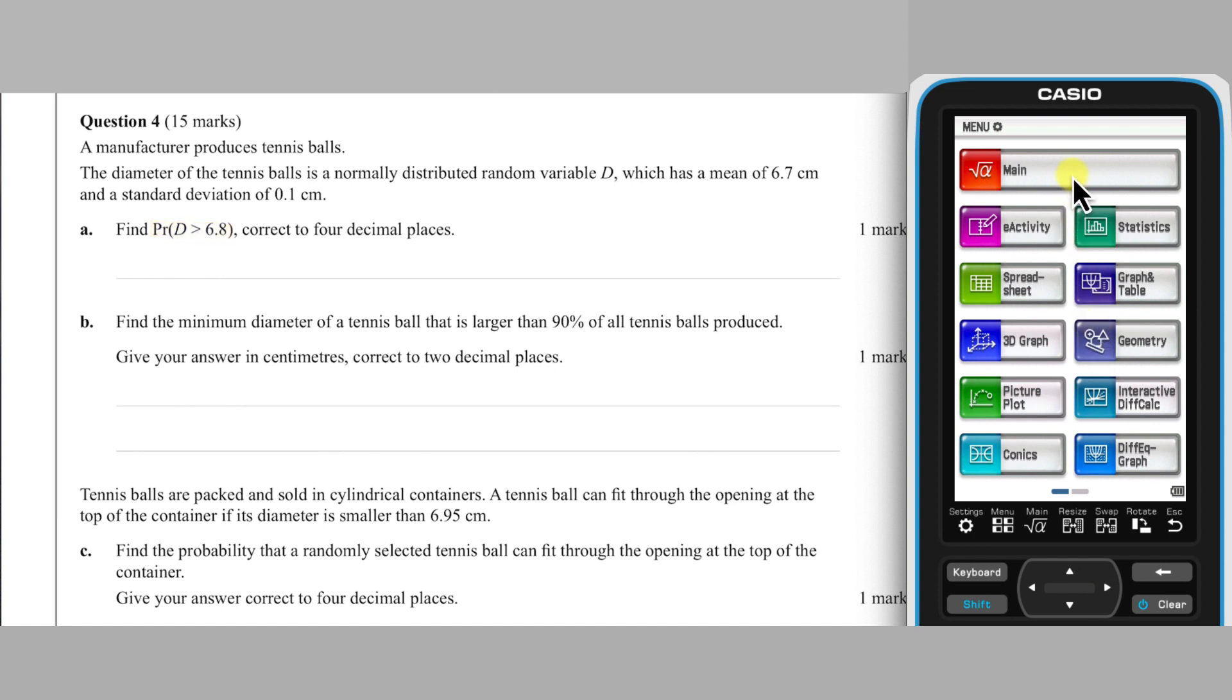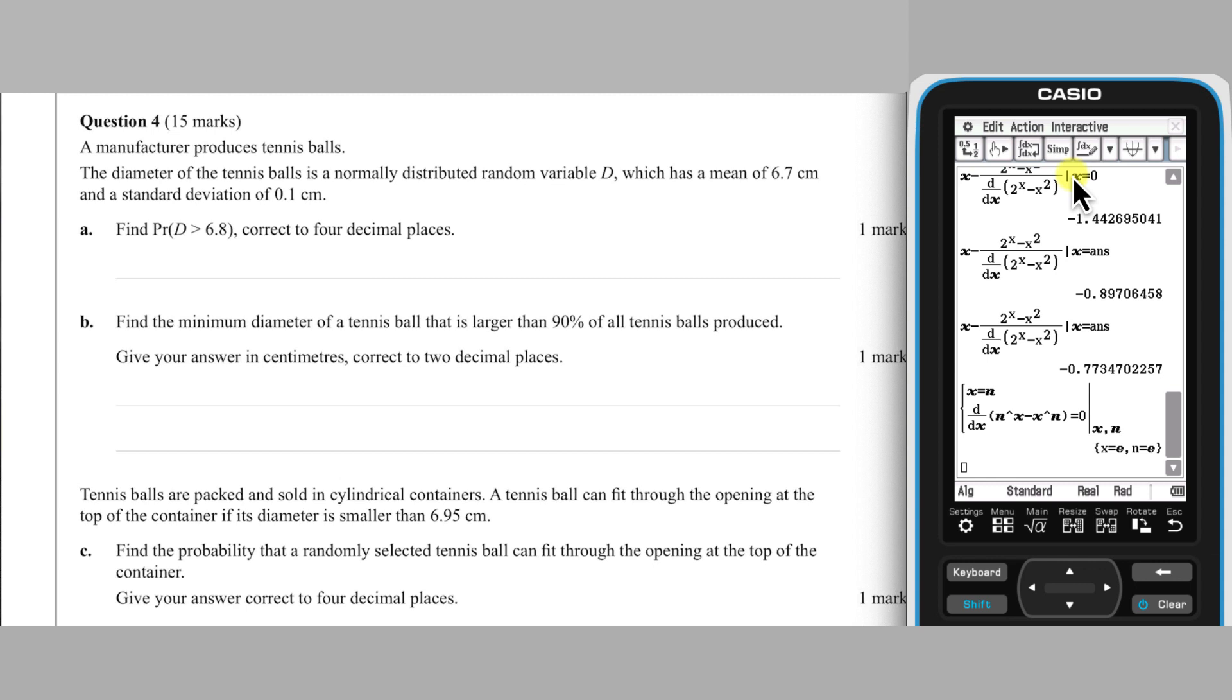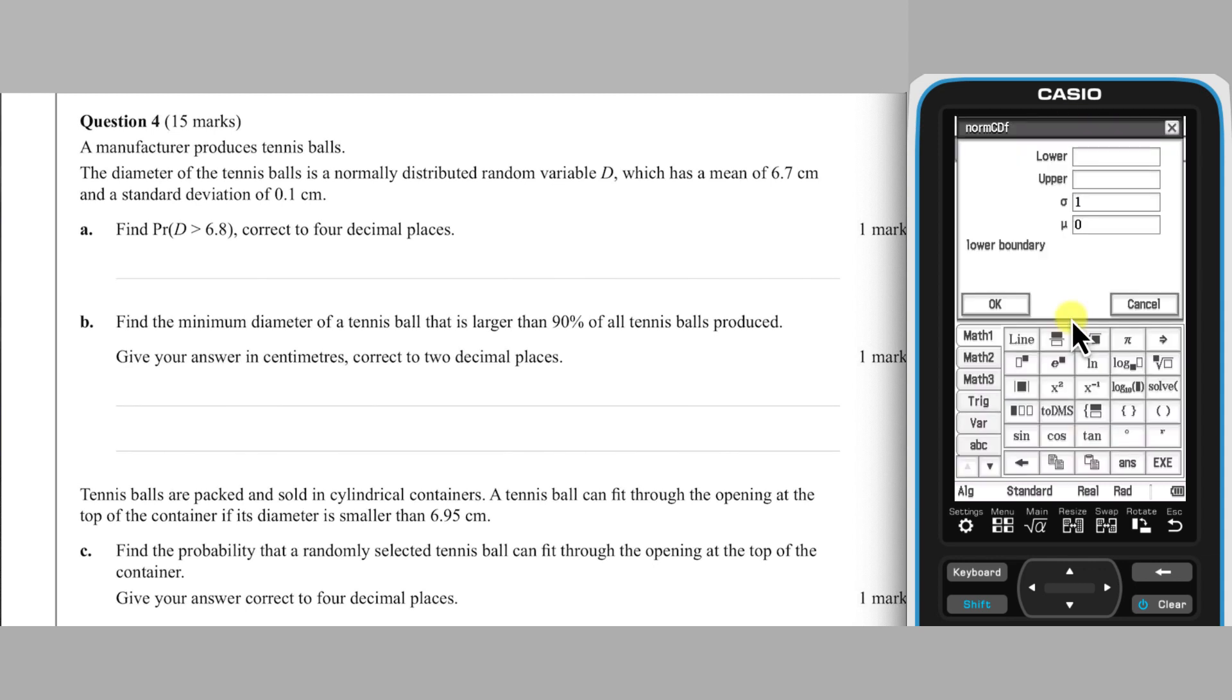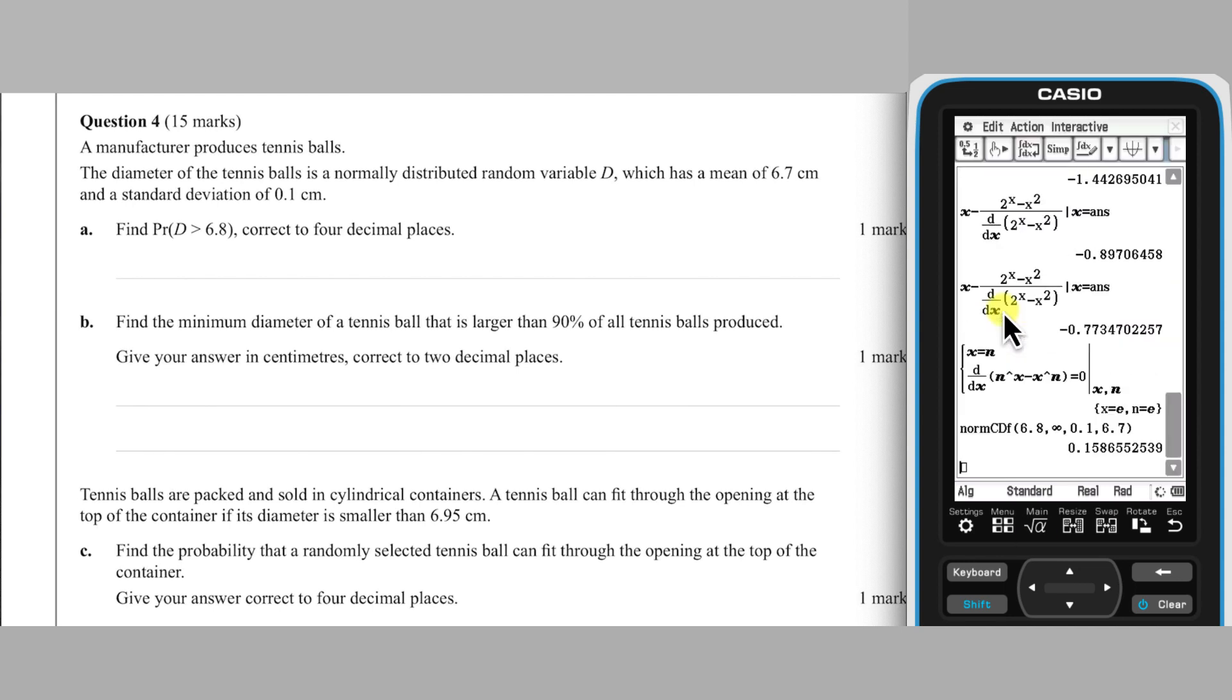I'm going to call up the necessary distribution command via interactive, choosing the continuous command normcdf. Enter the lower as 6.8 and the upper as infinity off the Math2 keyboard, the standard deviation as 0.1 and the population mean as 6.7. Tapping Execute, we obtain the probability value of 0.1587 to 4 decimal places.